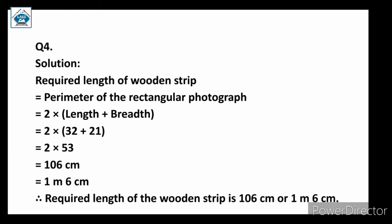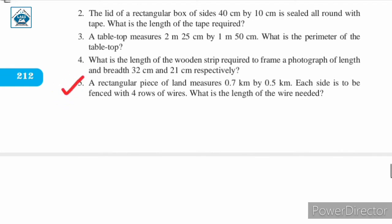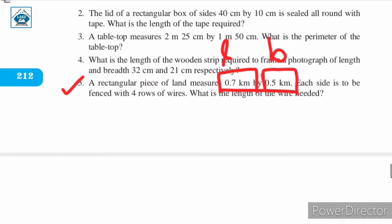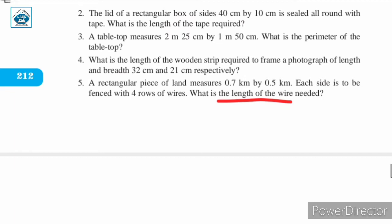Question number five: a rectangular piece of land measures 0.7 kilometer by 0.5 kilometer. Each side is to be fenced with four rows of wire. We are asked what is the length of the wire needed. The length is 0.7 kilometer and the breadth is 0.5 kilometer, and we need to fence with four rows.